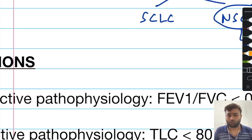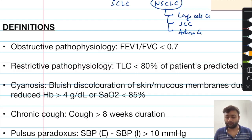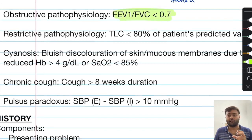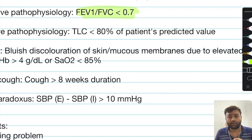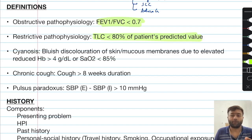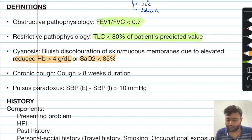Before we start the detailed discussion, you should know some important definitions. When a person has an obstructive pathophysiology, the FEV1 to FVC ratio is less than 0.7. For a restrictive type of pathophysiology, the TLC has to be less than 80% of the patient's predicted value. Cyanosis is defined as a bluish discoloration of the skin and mucous membranes due to an elevated amount of deoxygenated hemoglobin, with a value greater than 4 grams per deciliter, and it can also be detected on pulse oximetry.